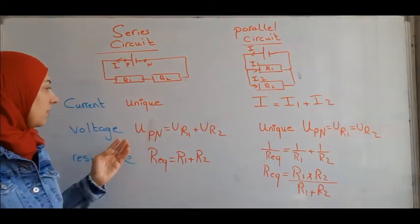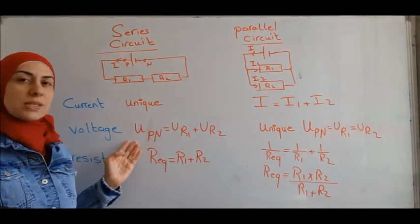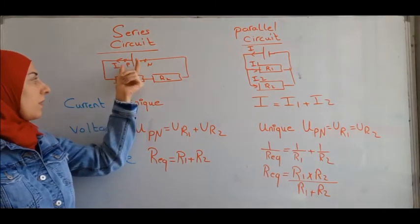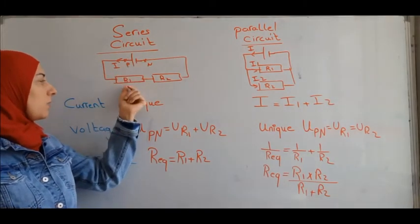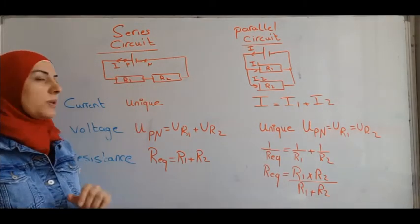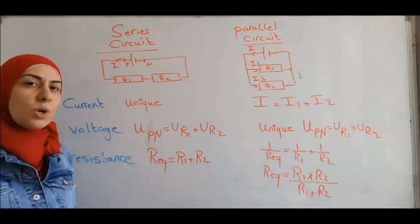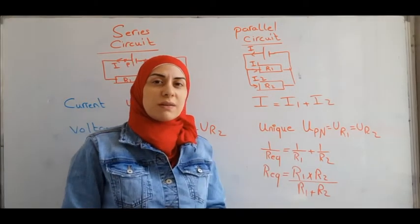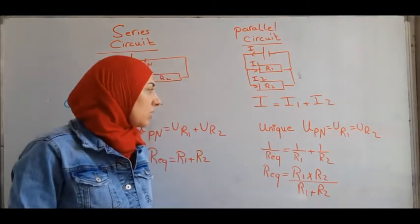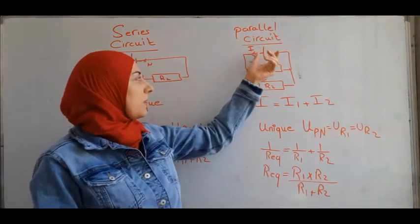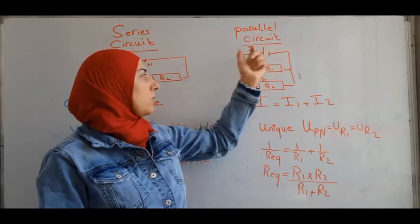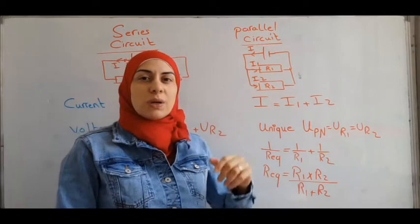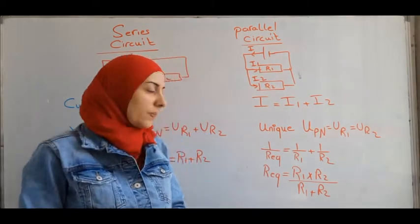In a series circuit, the voltage is additive: the voltage across the battery UPN equals UR1 plus UR2. In a parallel circuit, the voltage is unique: UPN equals UR1 equals UR2.